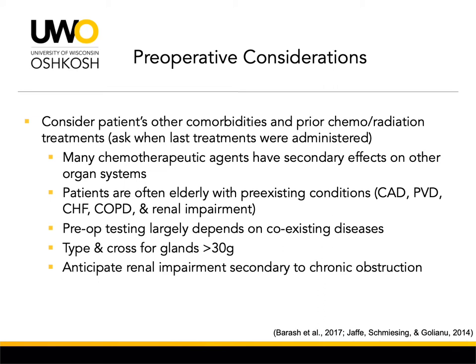We should anticipate renal impairment not only because of the comorbidities or because this is a surgery typically performed on the aging population, but because renal impairment secondary to chronic obstruction may be present, making it prudent to assess renal function and electrolytes in the preoperative period. Additionally, a type and cross should be drawn for prostate glands greater than 30 grams in weight, as there is an increased risk of bleeding with larger prostates. Preoperative testing is largely dictated by the patient's underlying coexisting diseases. If the patient has cardiac disease, for example, they should have an EKG or echo performed.